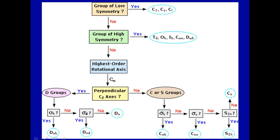Once you know the structure, you ask these questions on the flowchart. First, is it low symmetry — C1, Cs, or Ci? If it's high symmetry, is it tetrahedral, octahedral, icosahedral, or linear? If not, you look for the highest order rotation axis Cn. Do you have perpendicular C2 axes? Following the flowchart branches, you eventually determine what the symmetry group is.